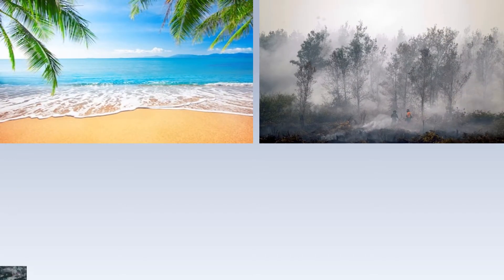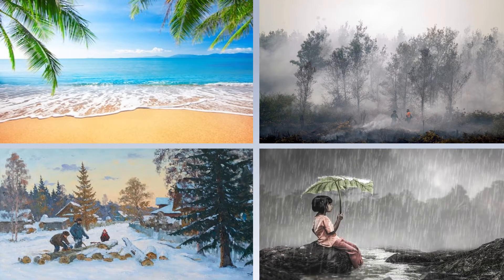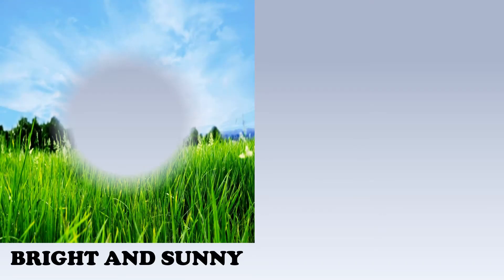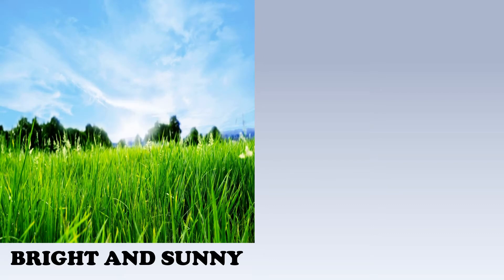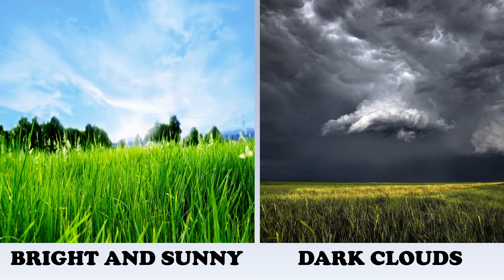What do you mean by weather? Weather is the condition of the atmosphere of a place at a particular time. The weather of a place can change rapidly. It may be bright and sunny with a clear sky in the morning, while in the evening the sky may be covered with dark clouds.